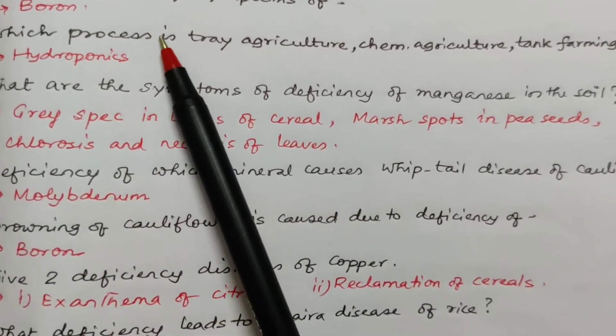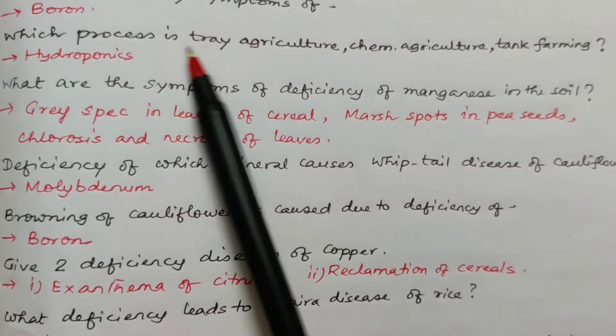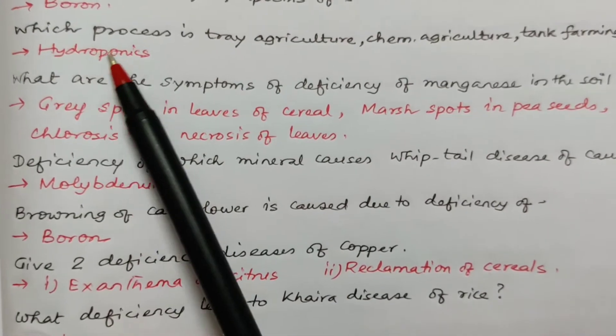Which process is tray agriculture or chemical agriculture or tank farming? They are also known as by these names. It is nothing but hydroponics.